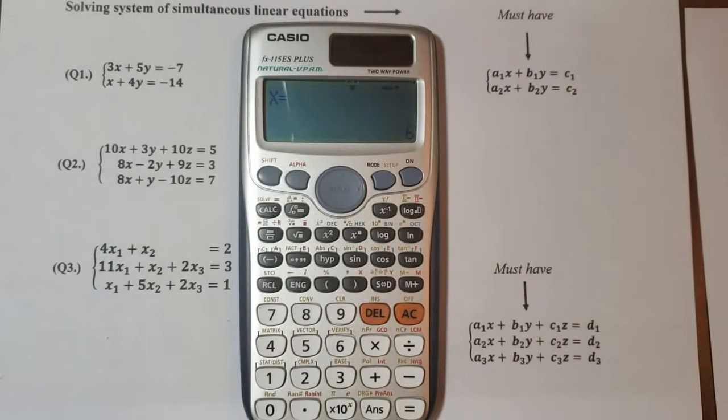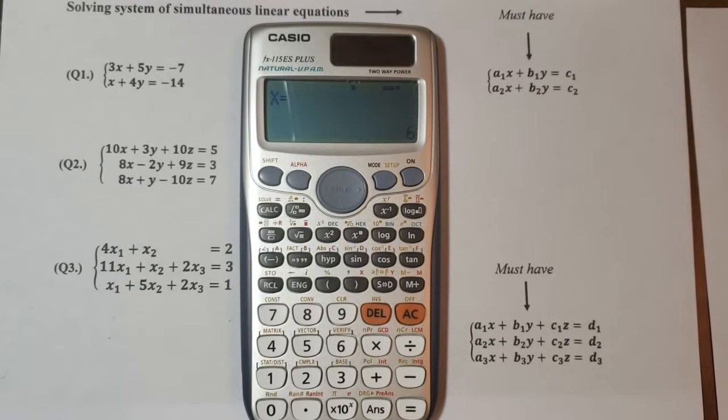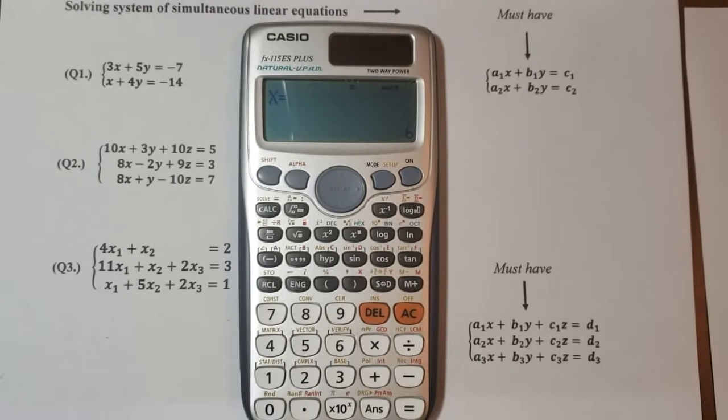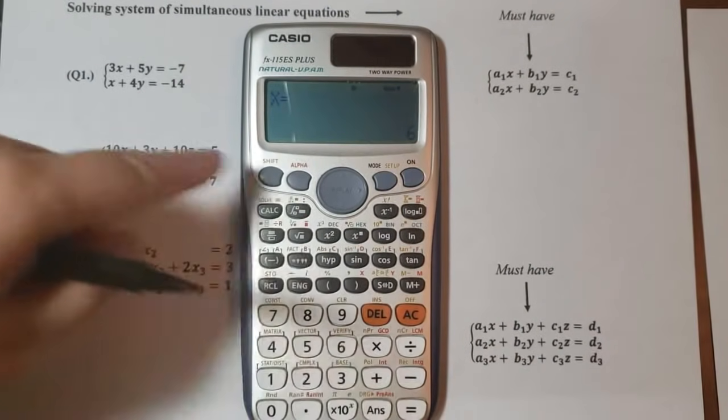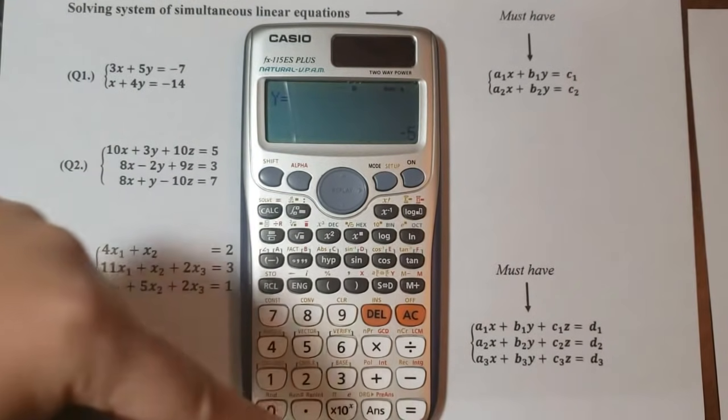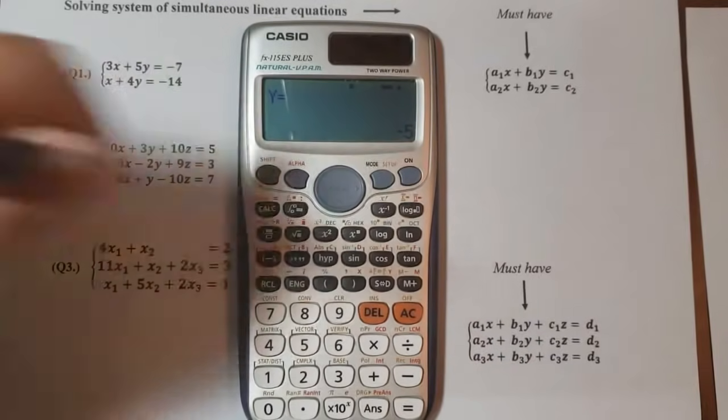Now as I can see, you can see that we have for x we have 6, and I press equal for y I have minus 5.